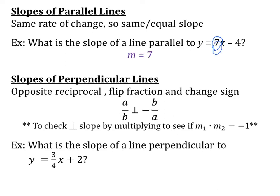Now let's talk about the slopes of perpendicular lines. Perpendicular lines have opposite reciprocal slopes. What this means is you are going to flip the fraction and change the sign. So if our slope is a over b, it's going to be perpendicular to the opposite sign of b over a.